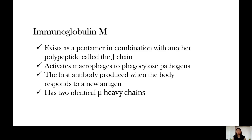Immunoglobulin M exists as a pentamer — it is composed of five monomer units in combination with another polypeptide called the J chain. Looking at the structure of IgM, it activates macrophages to phagocytose or engulf pathogens. IgM is the first antibody produced when the body responds to a new antigen.